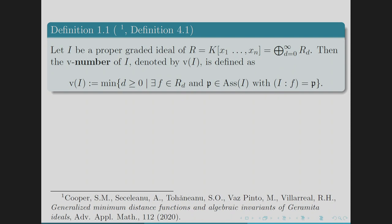First let us give the definition of the V number. Let I be a proper graded ideal of a polynomial ring with the standard grading. Then the V number of I, denoted V(I), is defined as the minimum degree of a homogeneous polynomial F for which I colon F is a prime ideal, since for a Noetherian ring the associated primes are of the form I colon F.